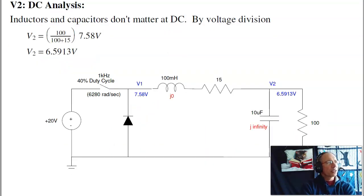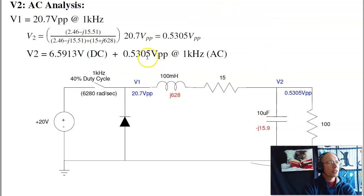So, let's do the two steps. I need to use DC analysis and AC analysis with superposition. The first part is DC. The average of V1 is 7.58 volts. At DC, the inductor doesn't matter. At DC, the capacitor doesn't matter. So we just have a voltage divider. The output is just going to be 100 over 100 plus 15 times V1, 6.5913 volts.